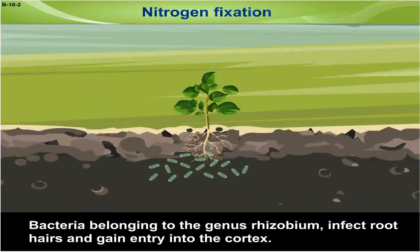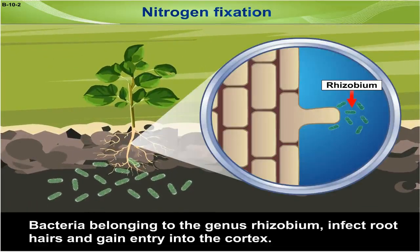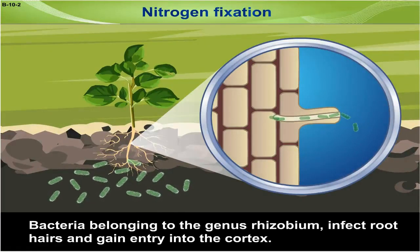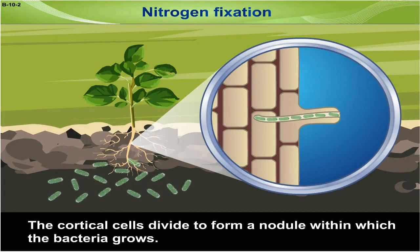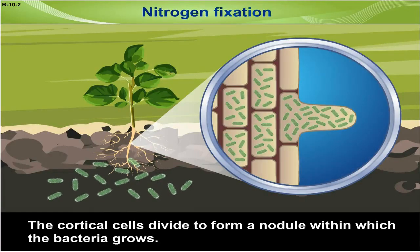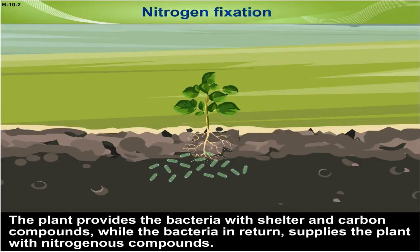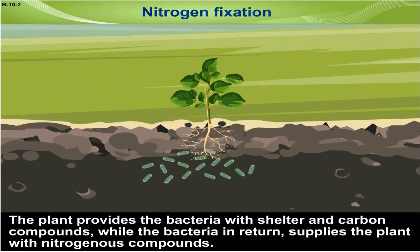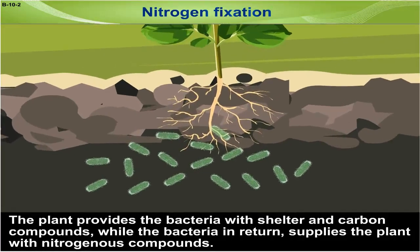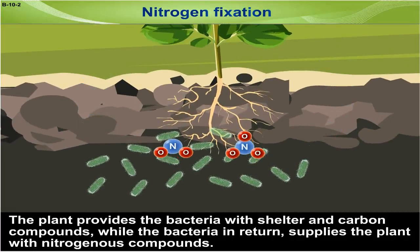Bacteria belonging to the genus Rhizobium infect root hairs and gain entry into the cortex. The cortical cells divide to form a nodule within which the bacteria grows. The plant provides the bacteria with shelter and carbon compounds, while the bacteria in return supplies the plant with nitrogenous compounds.